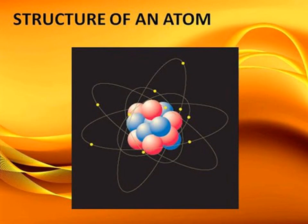We started with atom — what is atom, what is matter, and then the invention of atom. Tell me, who was the first person to invent atom? And the three important theories put forward by three scientists: John Dalton, Sir J.J. Thompson, and Ernest Rutherford.